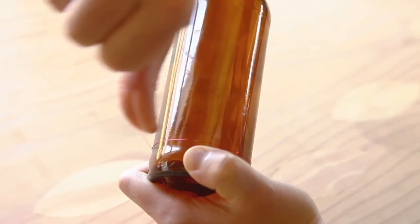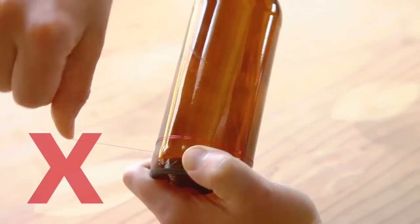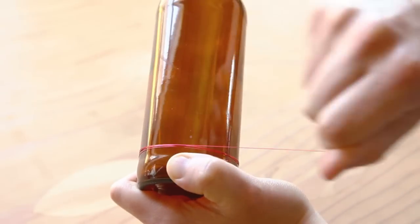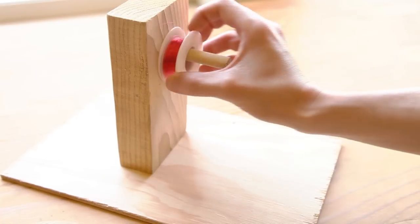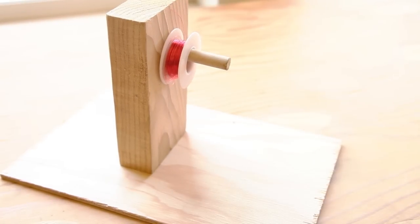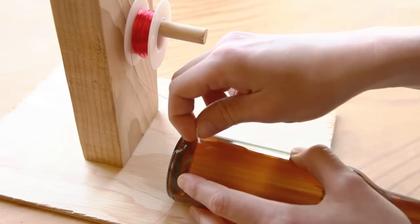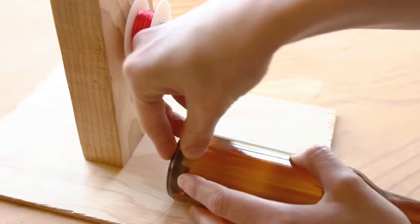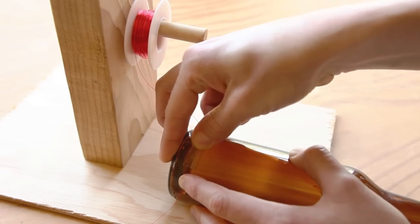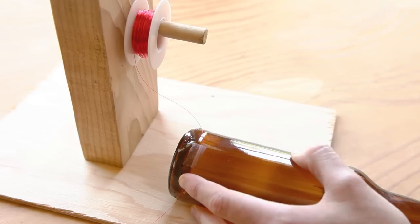While your instinct will be to wind the coil hand over bottle, this will introduce some unnecessary twist in the wire. A better way to wind the coil is to put the spool on a spindle, and then rotate the bottle to wind the coil. First, give yourself about 6 inches of lead wire. Starting at the bottom of the bottle, just above the lip, place a piece of clear tape to hold your wire in place.